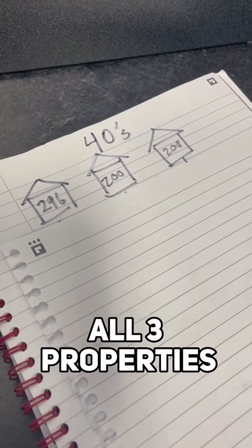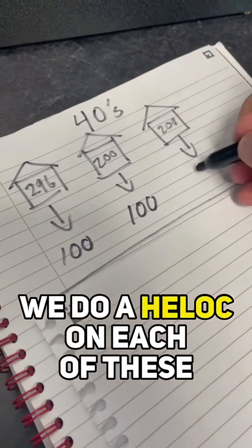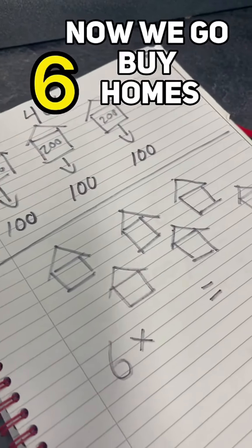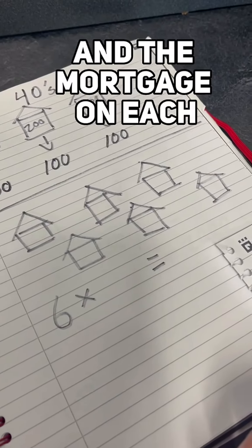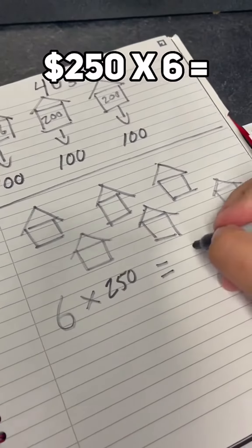Fast forward now into our 40s. All three properties continue to appreciate. We can now do a HELOC on each of these for up to $100,000. Now we go buy six properties. Just as before, after paying back the HELOC on the mortgage on each of these after rents, we cash flow about $250 per month.